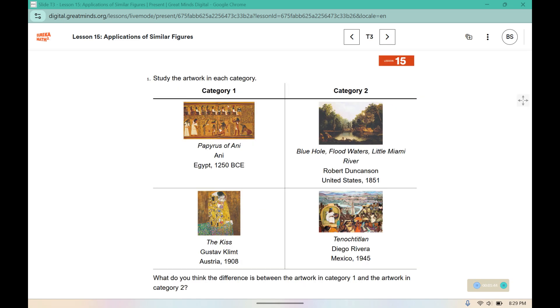Study the artwork in each category. What do you think the difference is between the artwork in Category 1 and the artwork in Category 2? Category 1 is all two-dimensional artwork. It appears to be flat, whereas Category 2 has a three-dimensional aspect to it, where you can see there's some depth to the paintings.